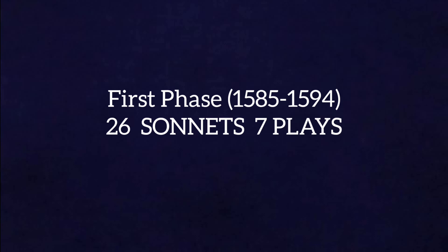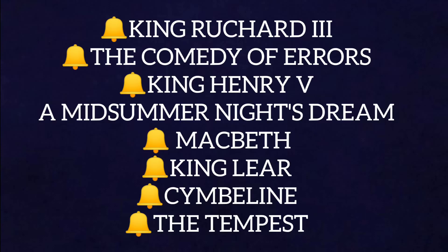This is not a formal categorization — we are doing this for ease of study. The first literary period falls broadly between 1585 to 1594. In this first section of his literary life, Shakespeare wrote 26 sonnets along with seven plays: Henry VI Parts 1, 2 and 3; Richard III; Titus Andronicus; Comedy of Errors; Taming of the Shrew; and the poems Venus and Adonis and Rape of Lucrece.